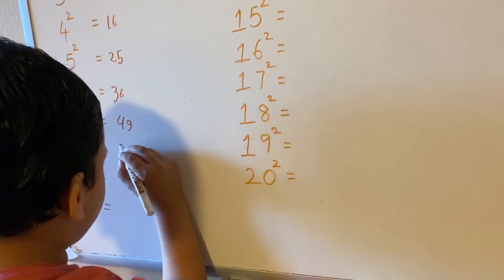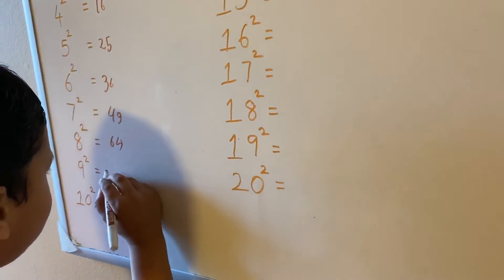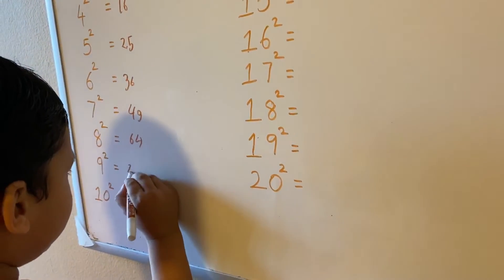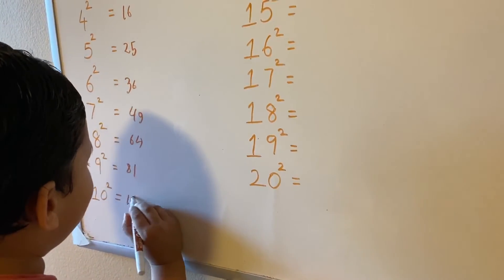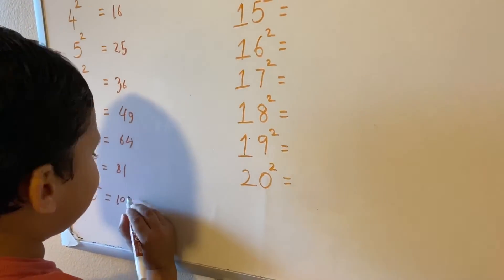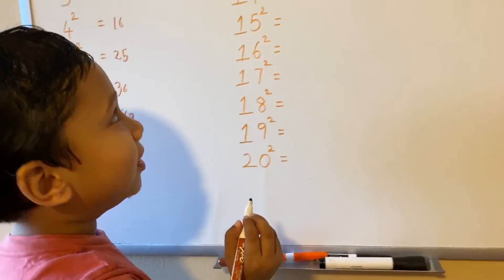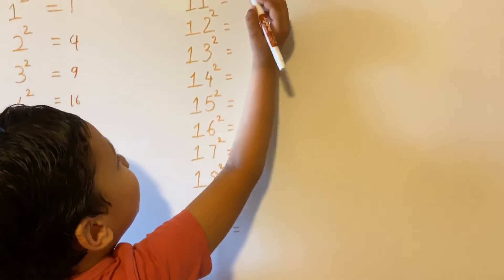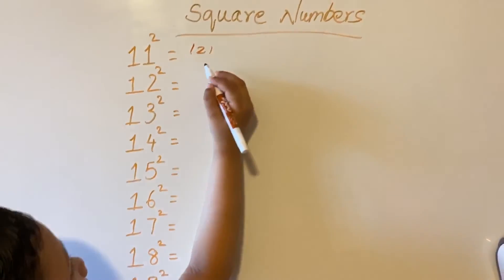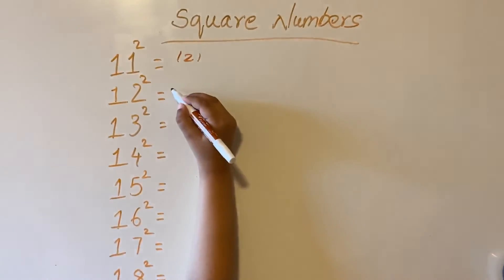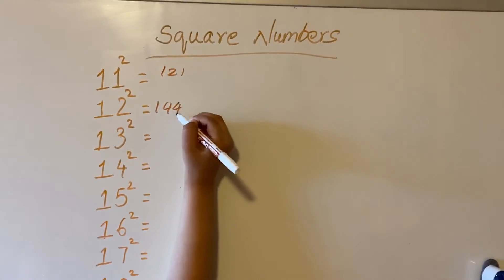Eight square is sixty-four. Nine square is eighty-one. Ten square is one hundred. Eleven square is one hundred and twenty-one. Twelve square is one forty-four.